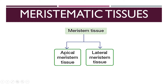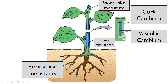Meristematic tissues are divided into apical meristem tissue and also lateral meristem tissue. Apical comes from the word apex — meaning hujung (tip), whether the top tip or bottom tip. Lateral means tepi (side), on the left and right sides. So we have root apical meristem at the bottom tip, shoot apical meristem at the top tip, and lateral meristem on both sides.